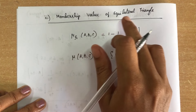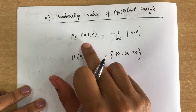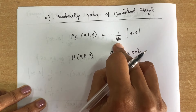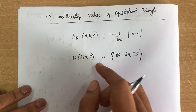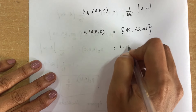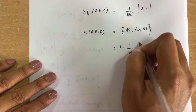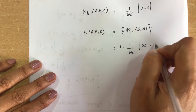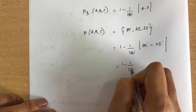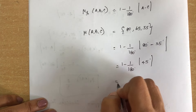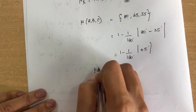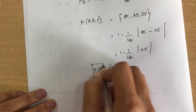For the equilateral triangle, the membership value formula is: 1 − (1/180)|A − C|. Substituting A=80 and C=35 gives 1 − (1/180)|80 − 35| = 1 − 45/180 = 1 − 1/4 = 3/4. So the membership value for the approximate equilateral triangle with angles 80, 65, and 35 is 3/4.